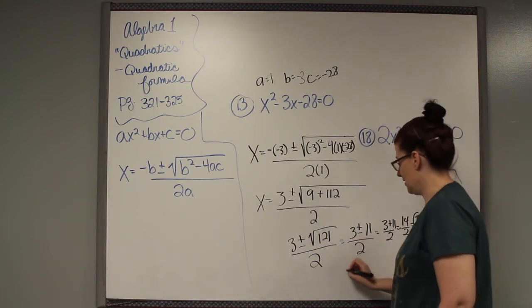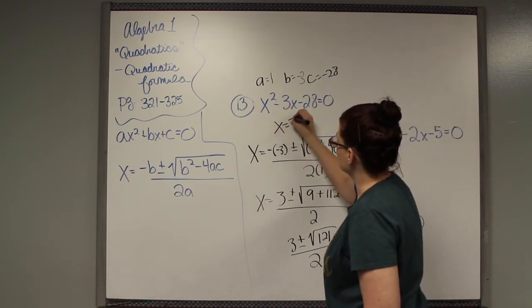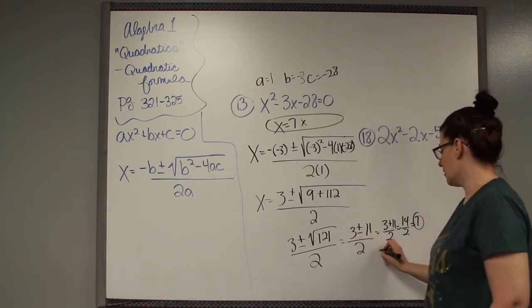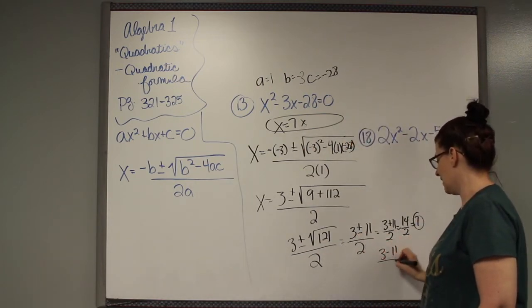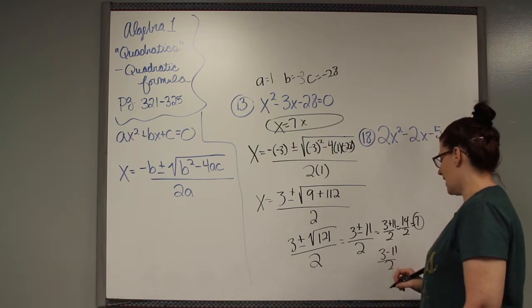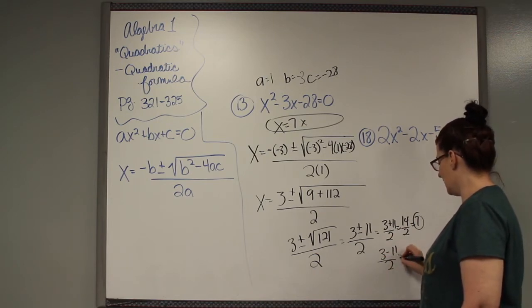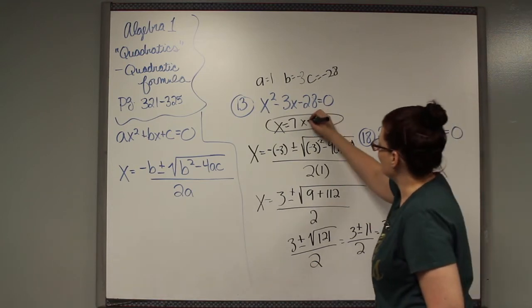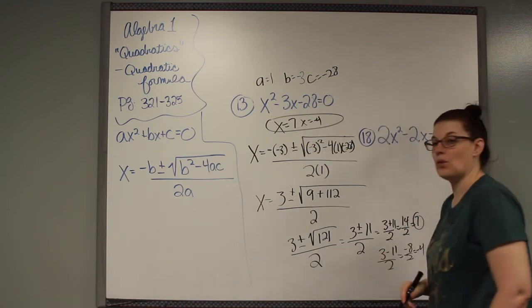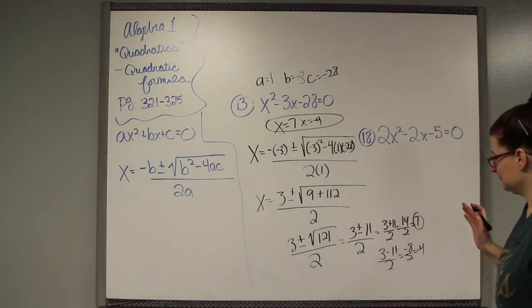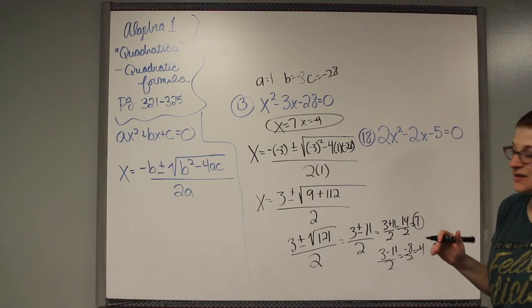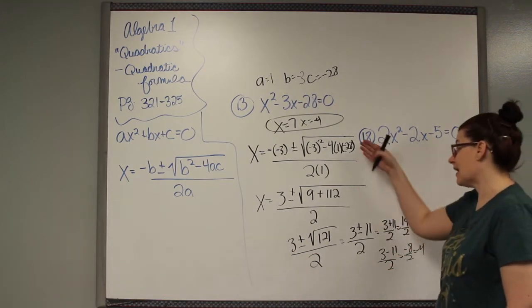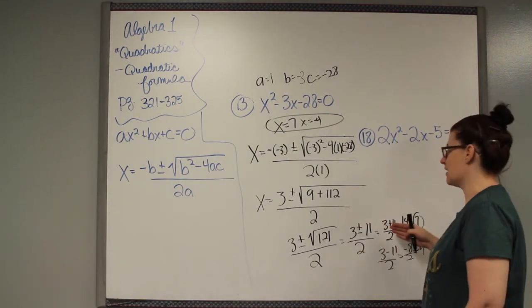So that's one answer and then I need to do it with the minus. 3 minus 11 over 2. 3 minus 11 I think is negative 8. So negative 8 over 2 would be negative 4. So x equals 7 and negative 4. It's a long process but it's just math which means there's plenty of rooms for mistakes in here so go slow and write it all out.